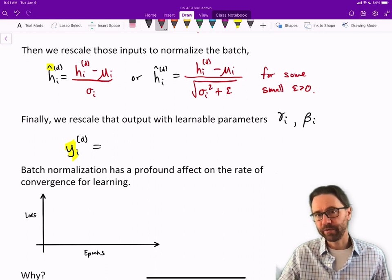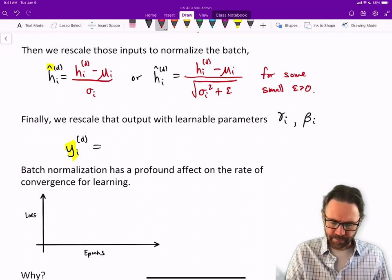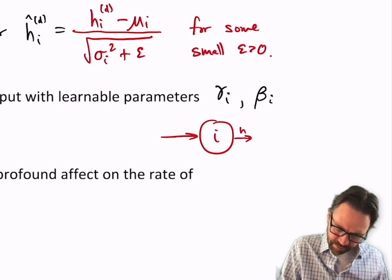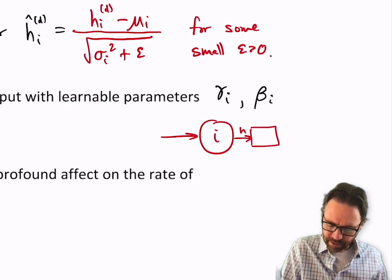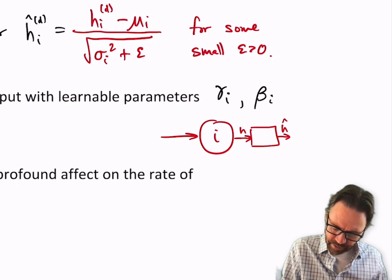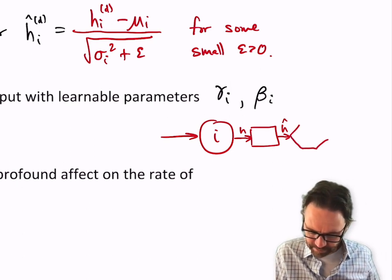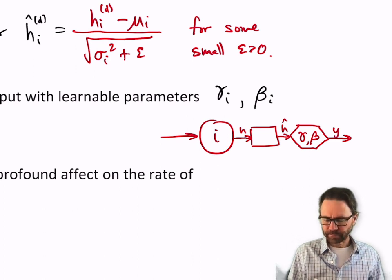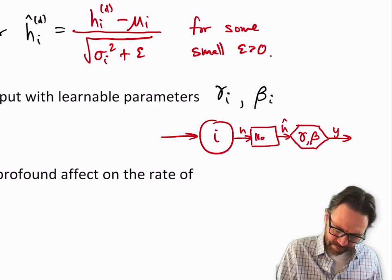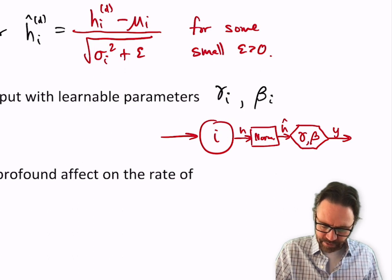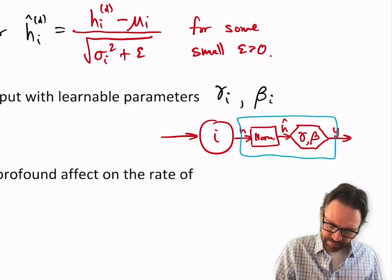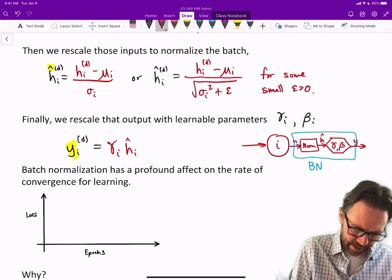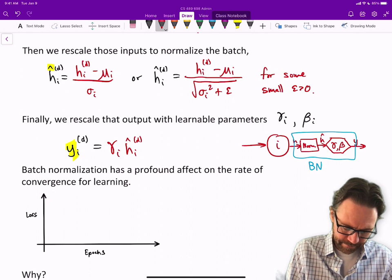I know I often use y as the output of a whole network, but here I'm just using y as the output of a particular node. Let me draw a picture of that. We've got the input to node i, we used to have our output h, but then we're rescaling it, normalizing it to get ĥ, and then we're going to rescale it again to get y. So this is normalization and then rescaling. This whole process here is batch normalization. So γi times ĥi,d plus βi.